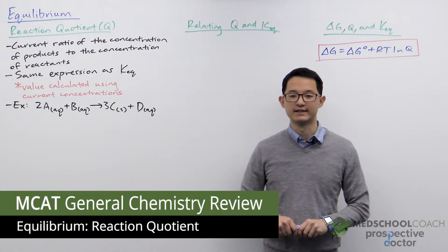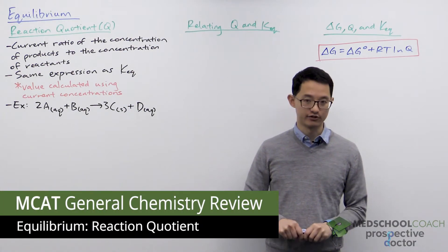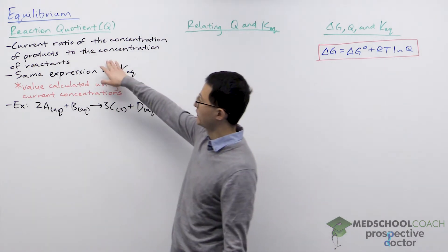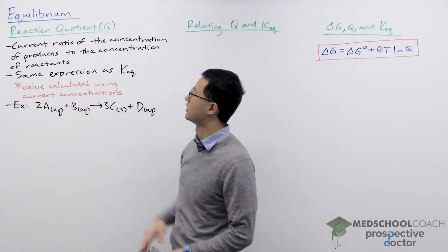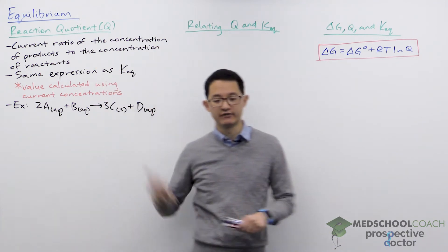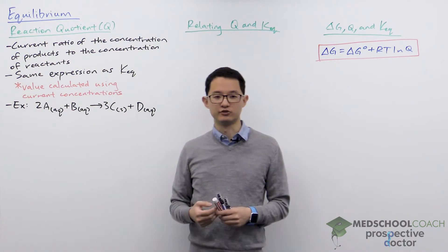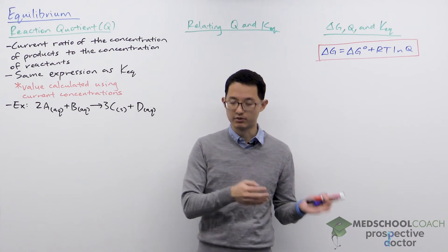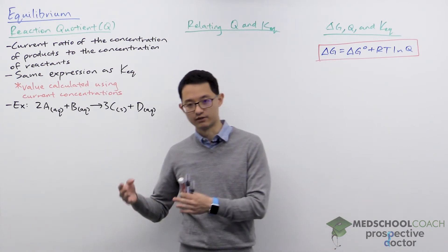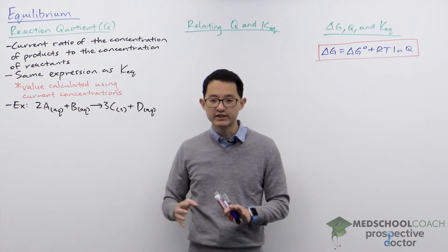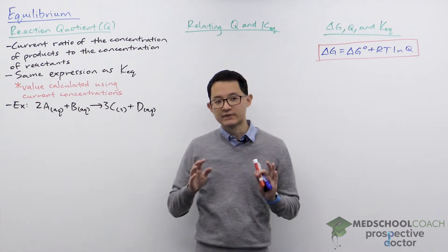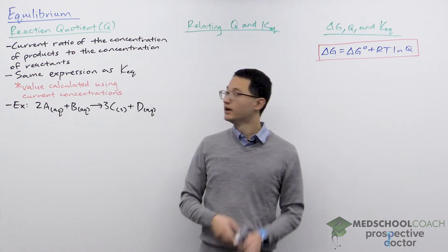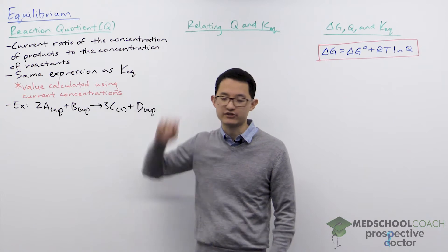In this video we're going to discuss the reaction quotient Q. The reaction quotient is the current ratio of the concentration of products to the concentration of reactants. This definition is very similar to the equilibrium constant definition — both are the ratio of product concentrations to reactant concentrations. The only difference is that the equilibrium constant is that ratio at equilibrium, while the reaction quotient is just the current ratio.